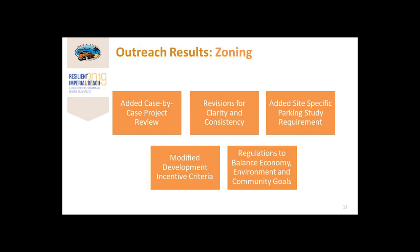The Local Coastal Program land use and zoning components included looking at recommendations made by the city's ad hoc committee. As a result of this committee's past work and input at Local Coastal Program update meetings, policies were drafted for the general plan and specific criteria have been added to the zoning ordinance.